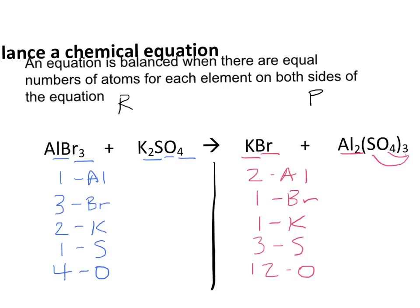We can see here that the number of atoms for each element are not equal on both sides. I'm going to start by drawing a 2 in front of the AlBr3. I did that because I see that I only have one Aluminum on the left side, and on the product side, I have two.